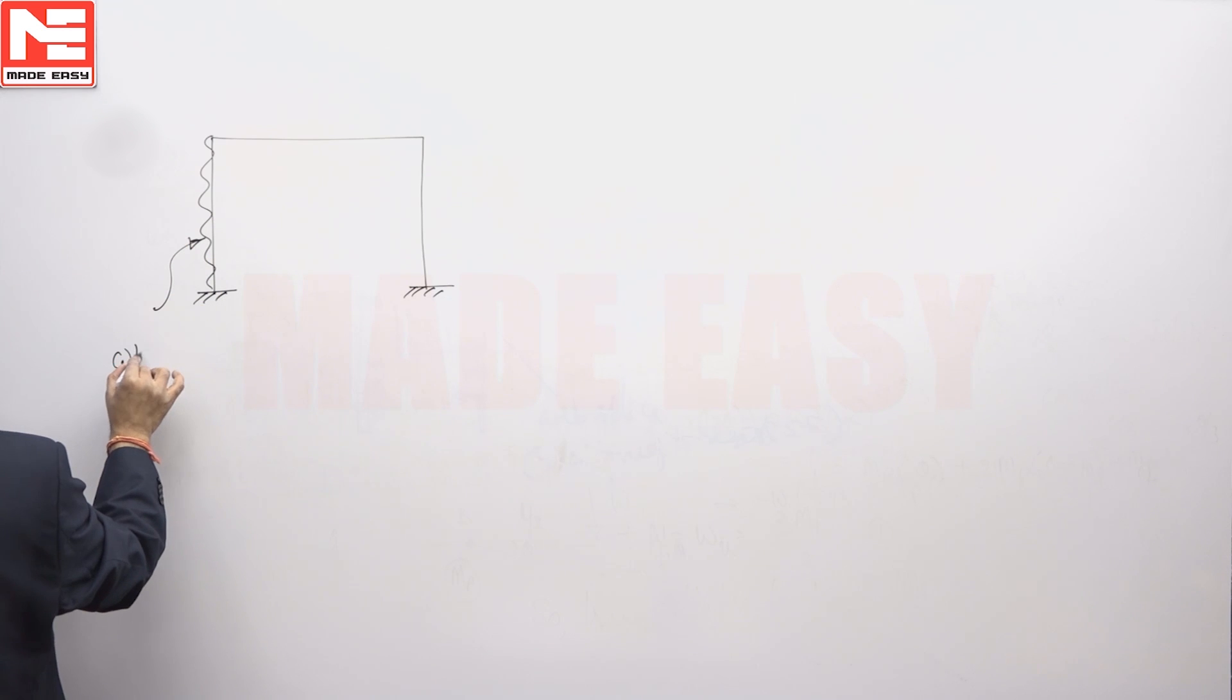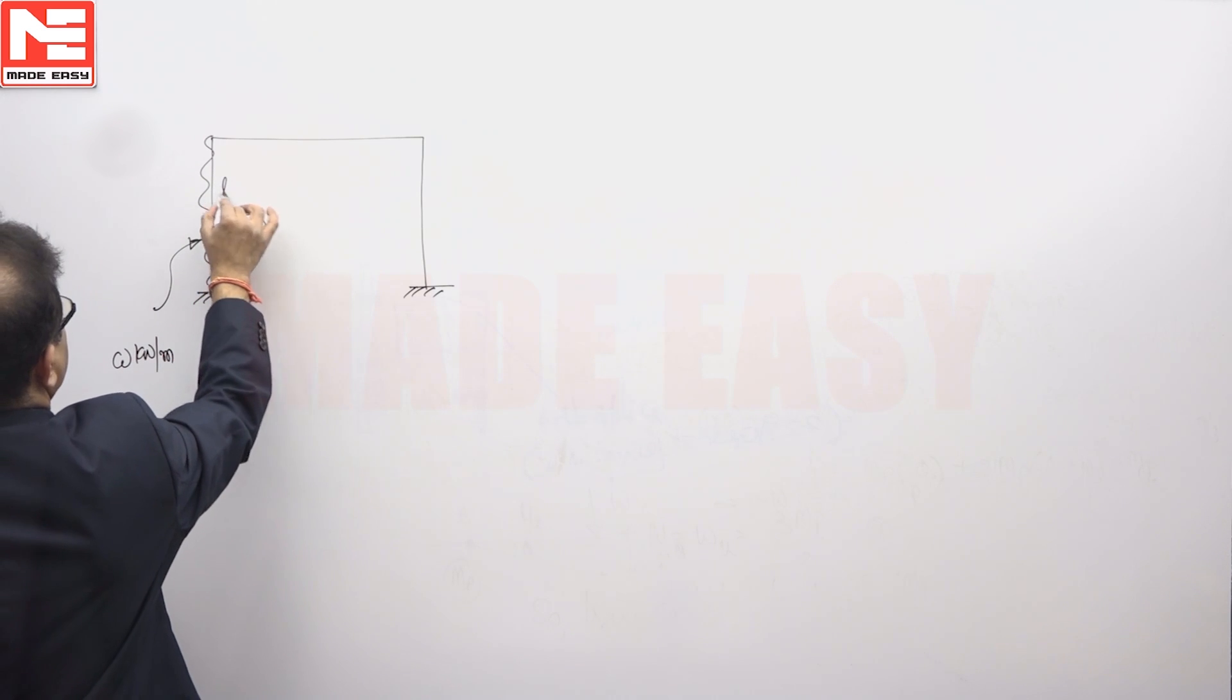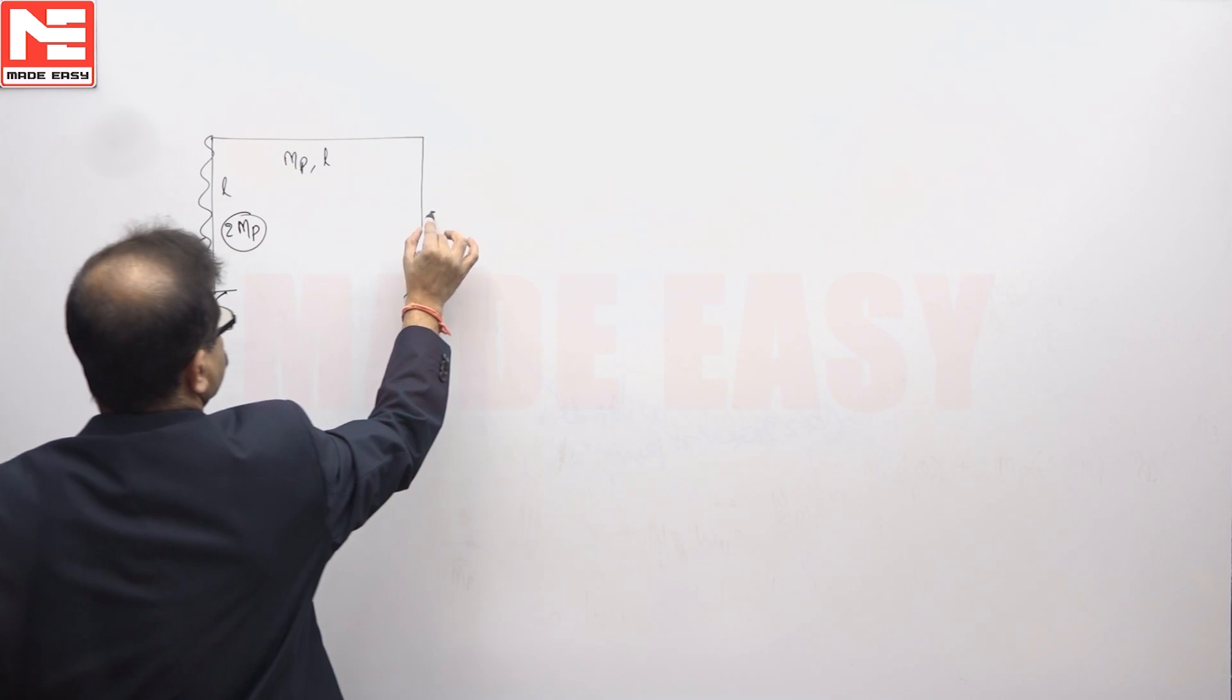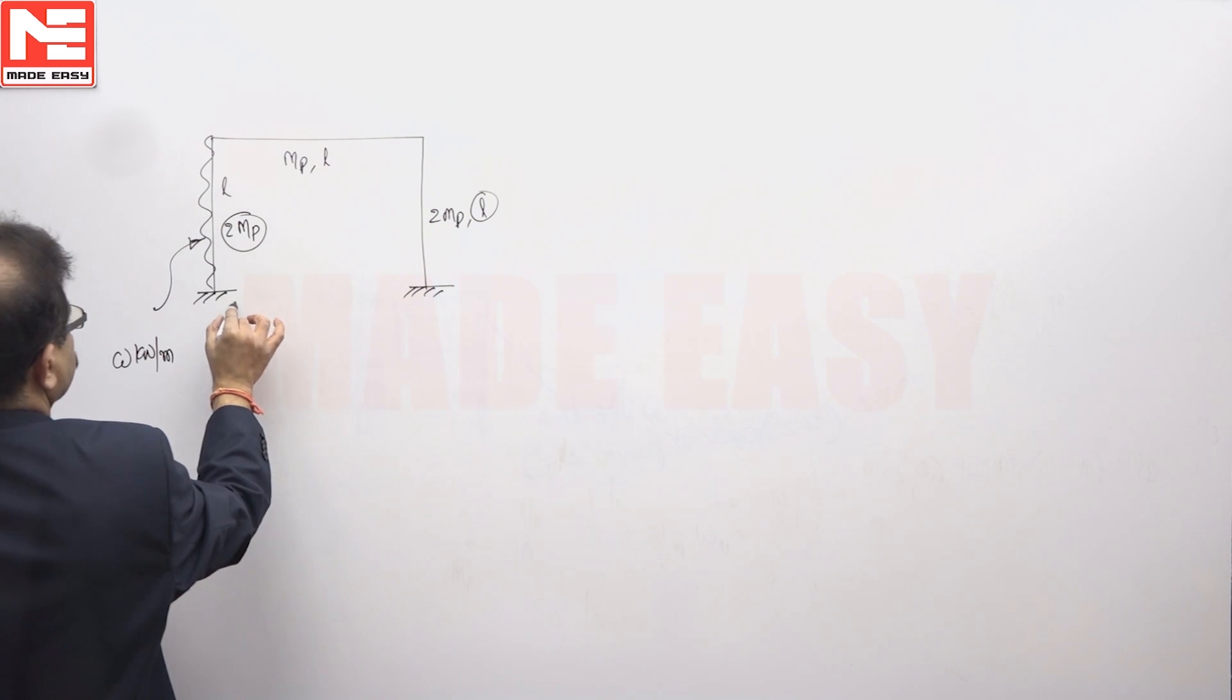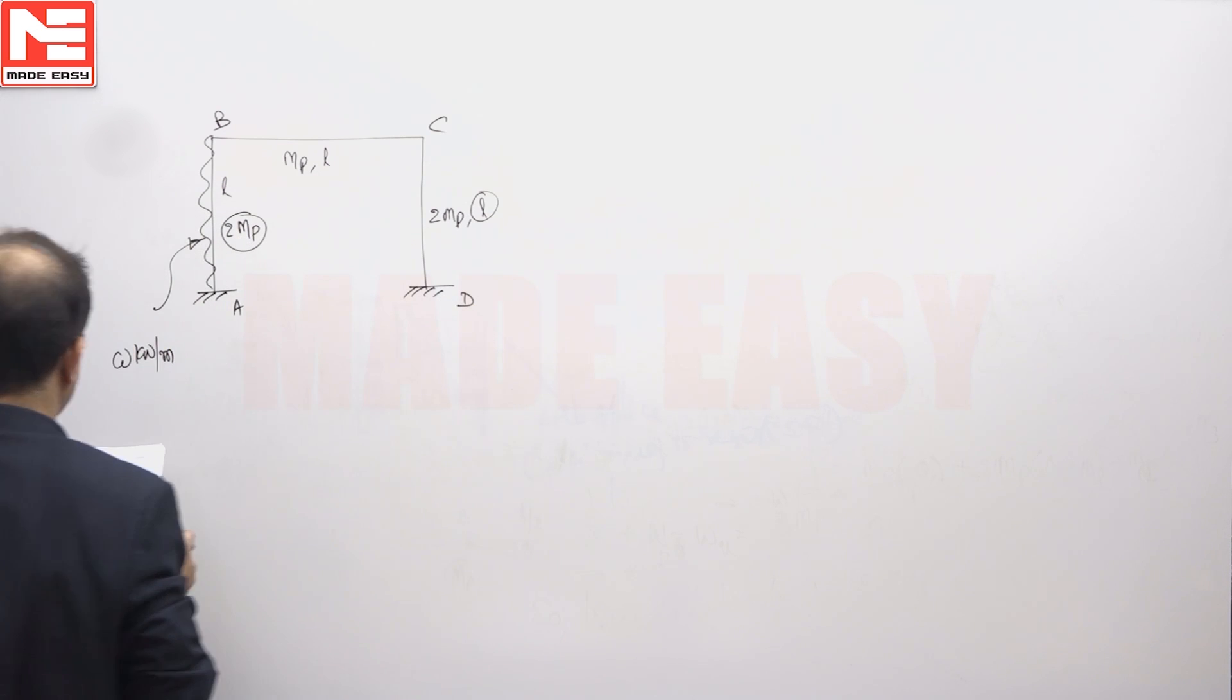We have UDL small w kilonewtons per meter, 2MP at L. This is MP L, 2MP and L. This is A, B, C, D.